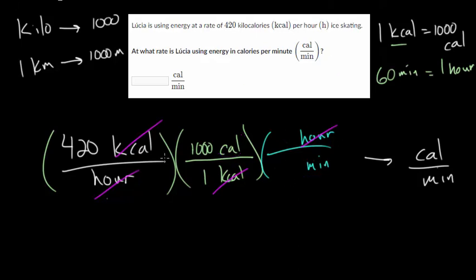Notice now that what we're left with is going to be calories per minute, which is what we want. For every one hour, there are 60 minutes. Once we've canceled out the units, now we can just do the multiplication. Do 420 times 1,000 and then divide it by 60. I'm first going to cancel out a zero there and there. 42 divided by 6 is 7. 7 times 1,000 is 7,000.